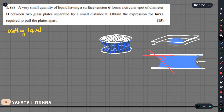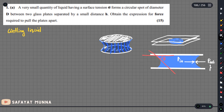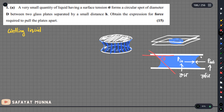We have a hidden variable: pressure. There is a pressure inside and a pressure outside. The pressure on the concave side is higher. Surface tension acts at the curved liquid surface between the two plates.